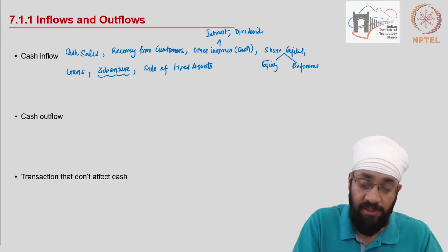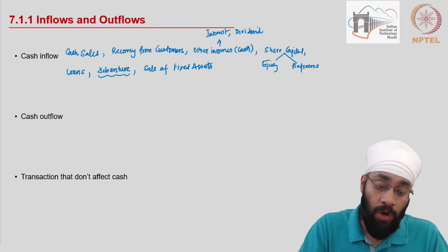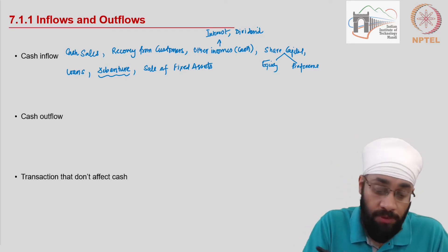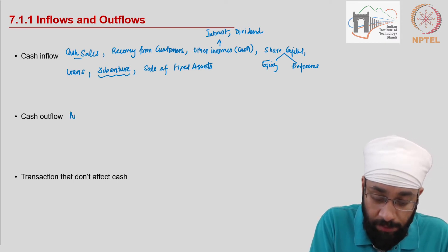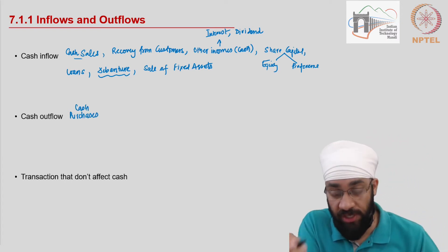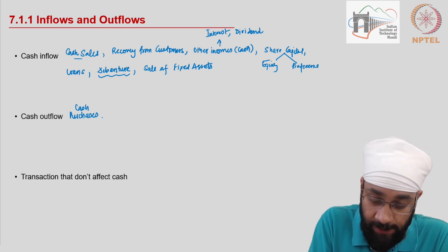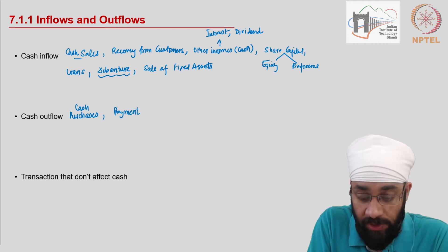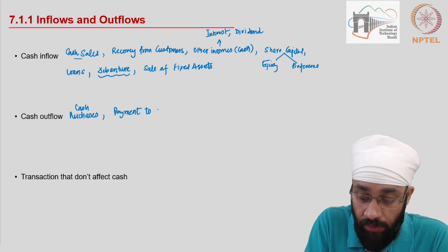Now, how does cash go out of the business? All the things which are opposite of the inflows. When we have cash sales, the opposite is purchases — when you purchase and pay in cash. You can also have payment to vendors which happens later after the purchase has been done — payment to creditors.